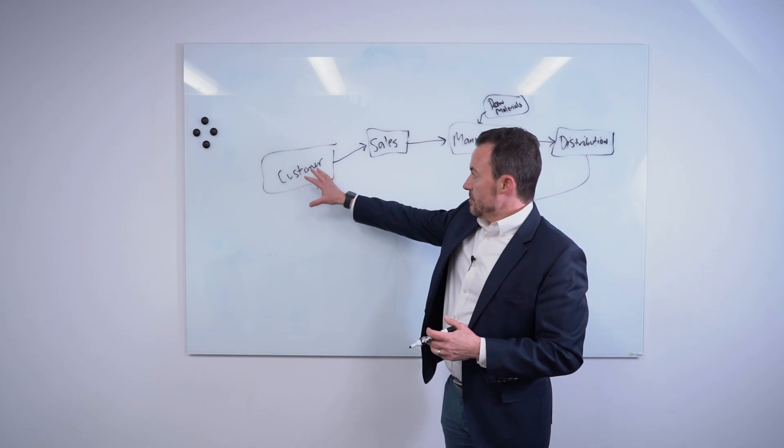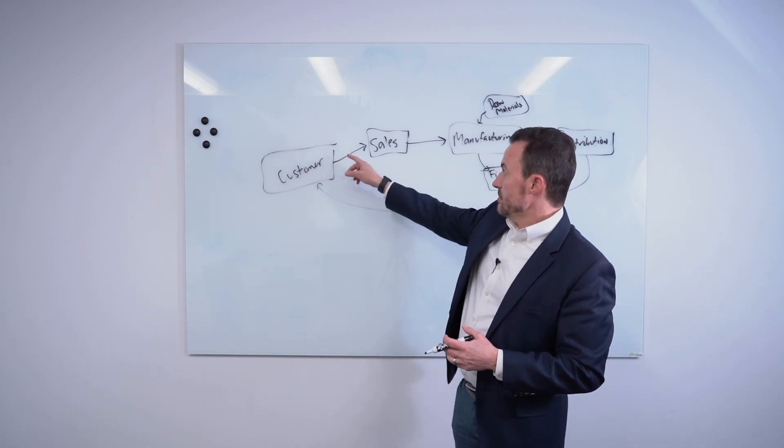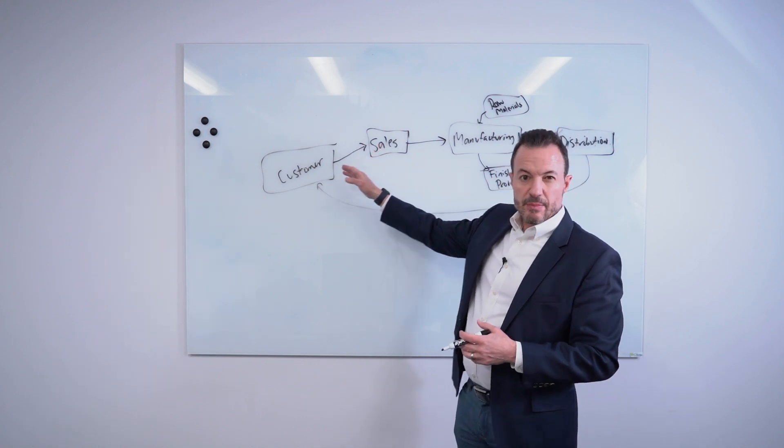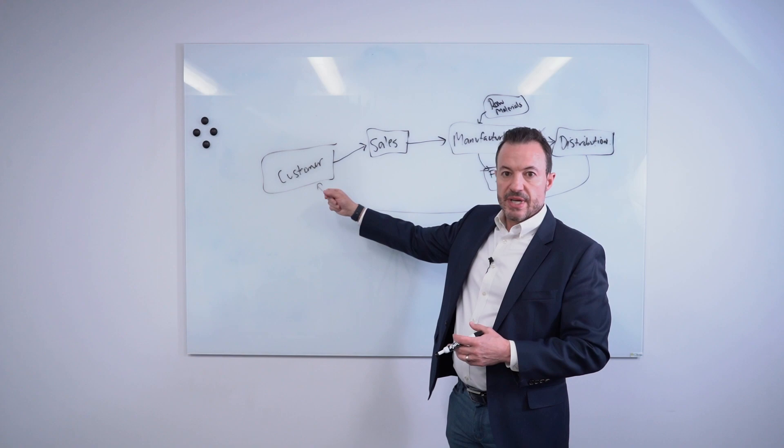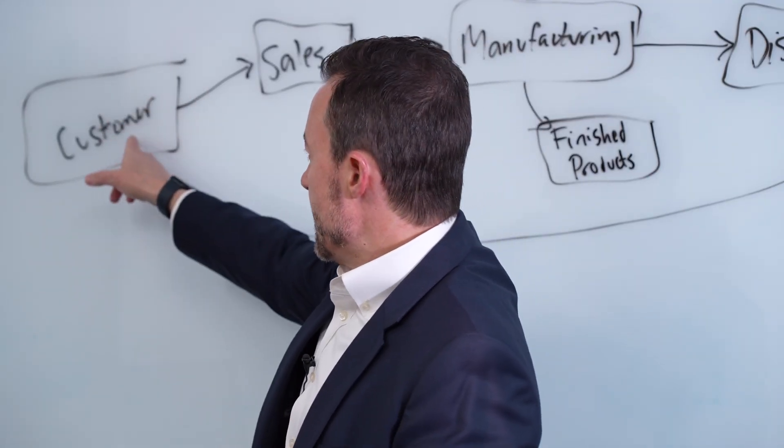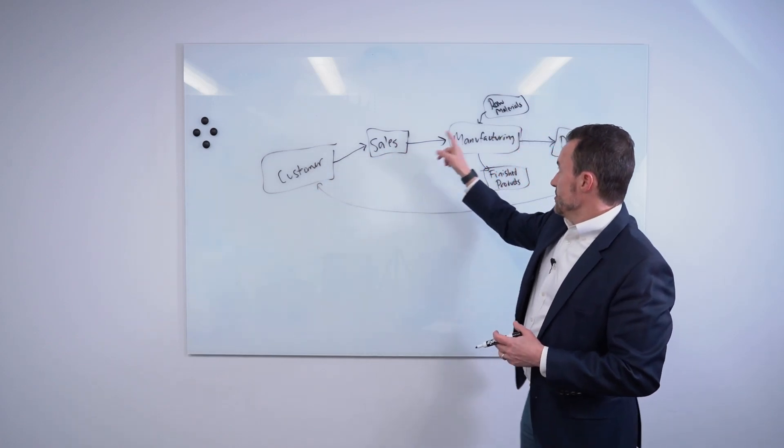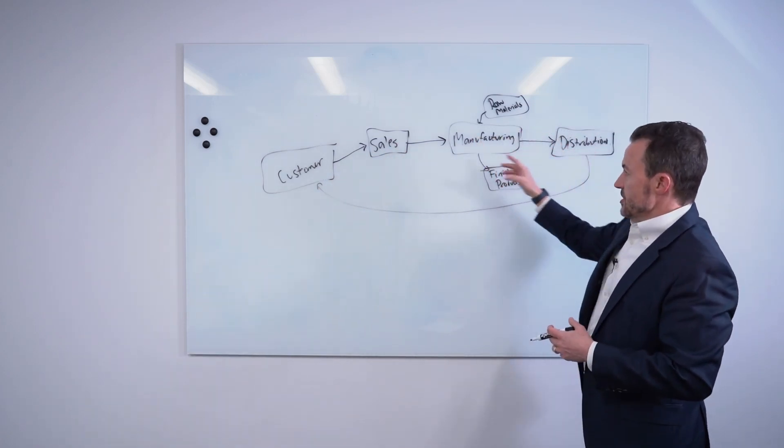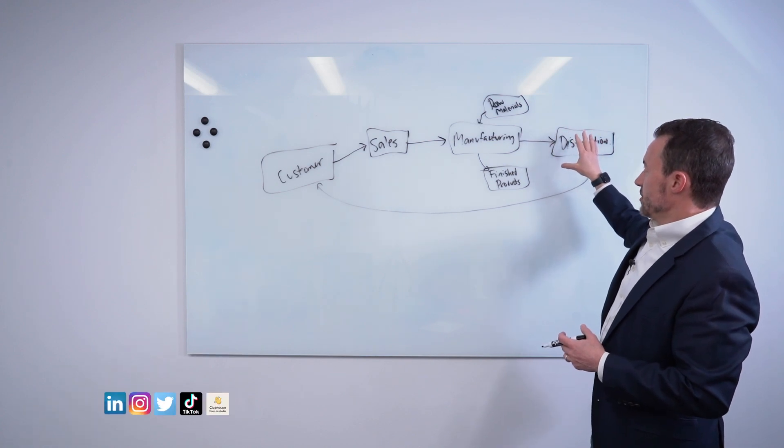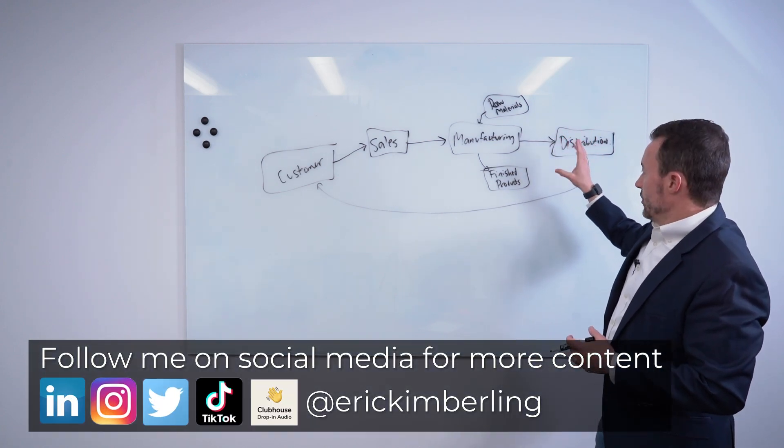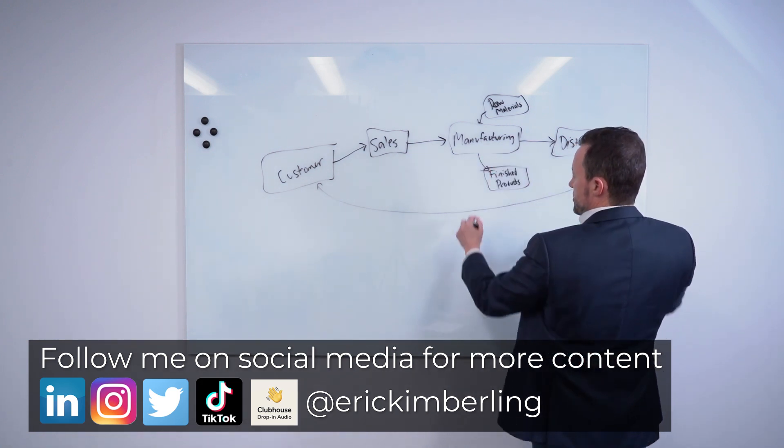So customers are producing data in terms of inquiries that they might have with the sales team. They might be hitting a website. They might be filling out forms or expressing some sort of interest, sending emails, whatever the case may be. A lot of data is coming from your customers. Obviously throughout the sales, manufacturing and distribution process, this whole extended process here is going to create quite a bit of data as well.